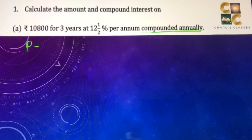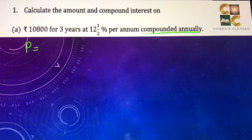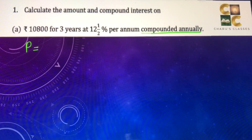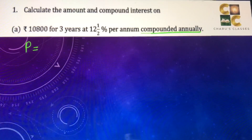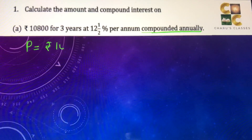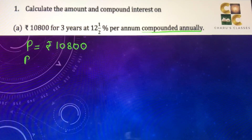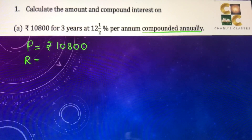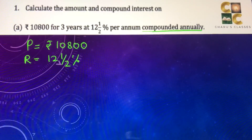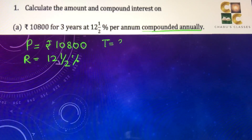Compounded annually is very important. First, we will write what is given to us. The loan amount given or taken is called the principal. So in this case, the principal is rupees 10,800, the rate of interest is 12 and a half percent — rate is always in percentage — and the time is three years.